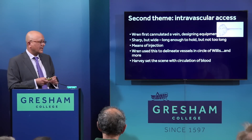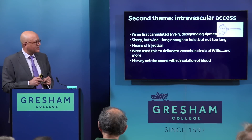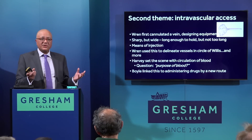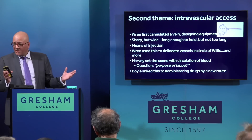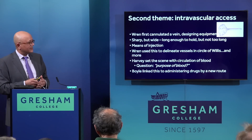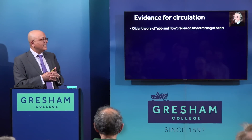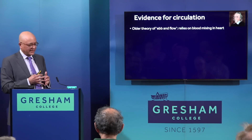Harvey had set the scene with his discovery of the circulation of blood. The question arose: what's the purpose of this circulation? Can we use it in some way? Wren's friend Boyle was thinking about whether new drugs could be administered by this route into the blood — hitherto, drugs were only ever ingested. Now that blood was circulating and Wren had discovered a way of getting things into the blood, could they do something more? Harvey's older theory was that blood sort of ebbed and flowed in a pendulum-like motion, but that relied on blood mixing within the heart.